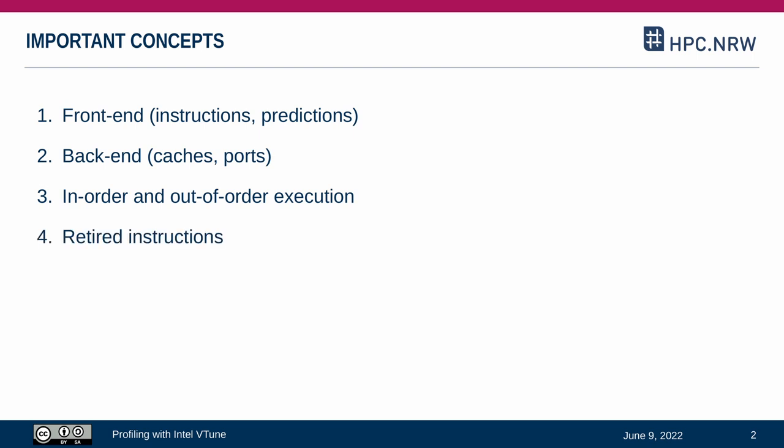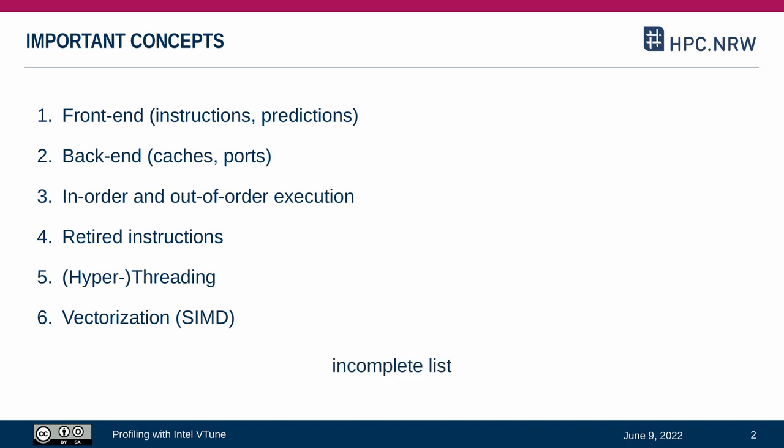Retired instructions are mentioned a lot. This refers to all instructions that actually contribute to the final result of a program. CPUs can execute multiple threads, sometimes even on a single core with shared resources between the threads. Another level of parallelization within a single core is achieved through vectorized instructions. Single instruction, multiple data, short SIMD, describes the process of applying a single instruction to multiple data objects simultaneously in one step. This list is of course incomplete if you consider the whole CPU architecture, but the concepts in this list often occur in vTune profile results.